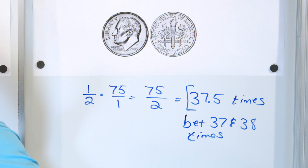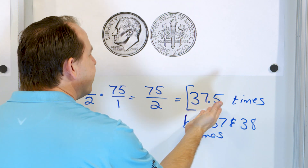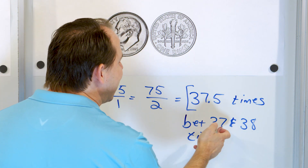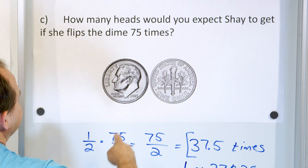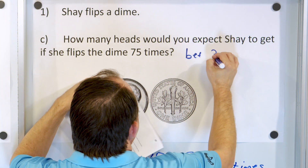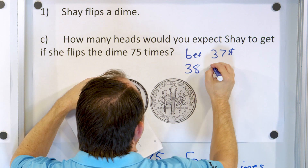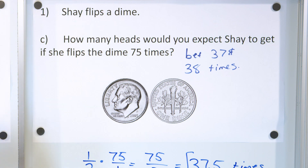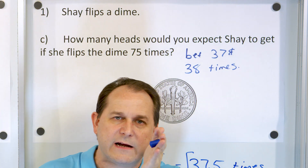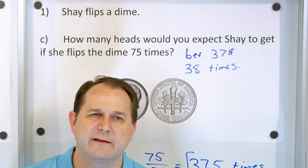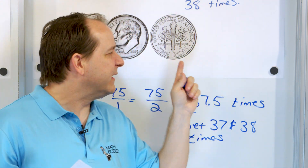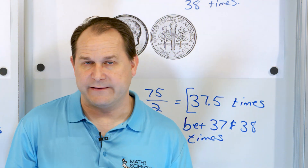Because it was an odd number divided by 2, you get a decimal here. This just gives you an idea of what's going to happen — between 37 and 38 times is what you'd expect. In reality, if you flip it 75 times, maybe it's not exactly that close, since 75 flips is a fair number but not like 1,000. As you do more and more flips, you get closer and closer to half heads and half tails.